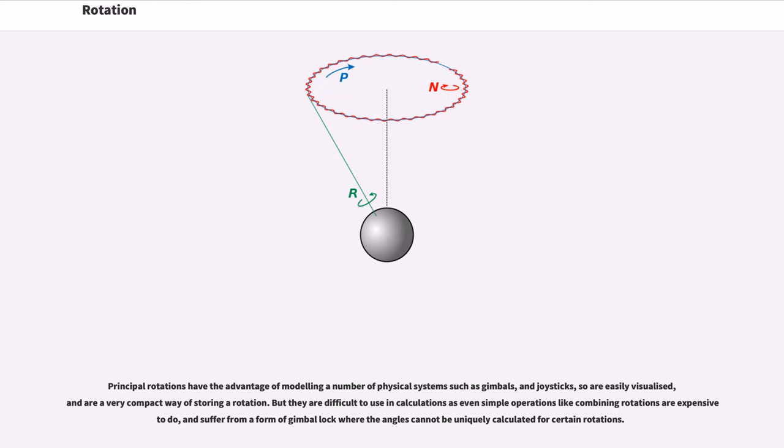The principal rotations have the advantage of modeling a number of physical systems such as gimbals and joysticks, so are easily visualized, and are a very compact way of storing a rotation. But they are difficult to use in calculations as even simple operations like combining rotations are expensive to do, and suffer from a form of gimbal lock where the angles cannot be uniquely calculated for certain rotations.